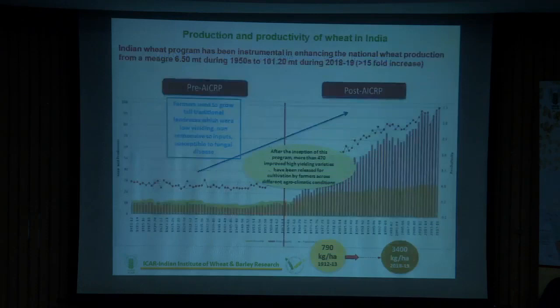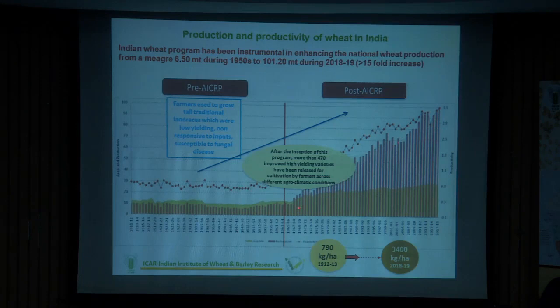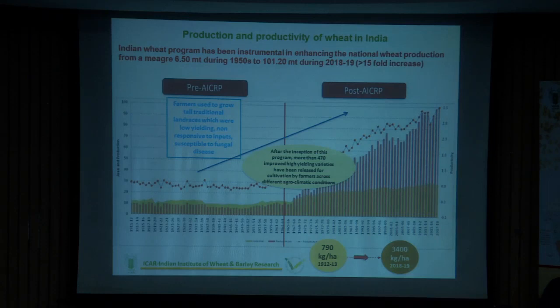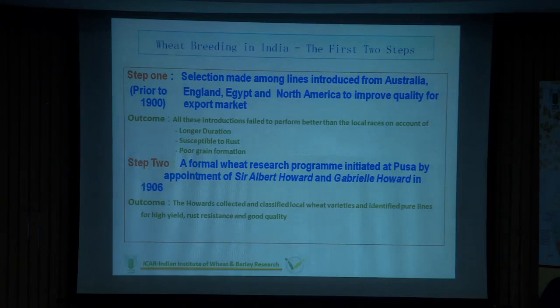You may have already seen how the inception of agriculture in India and how improved varieties led to the production of 100 million tonnes of wheat. This all started with the Green Revolution. Before the 1900s, we used to have wheat introductions from Australia, England, and Egypt when we were a commonwealth nation. We used to make selections from them, but they were long-duration, susceptible varieties with poor grain quality. There was no systematic research done in case of wheat.